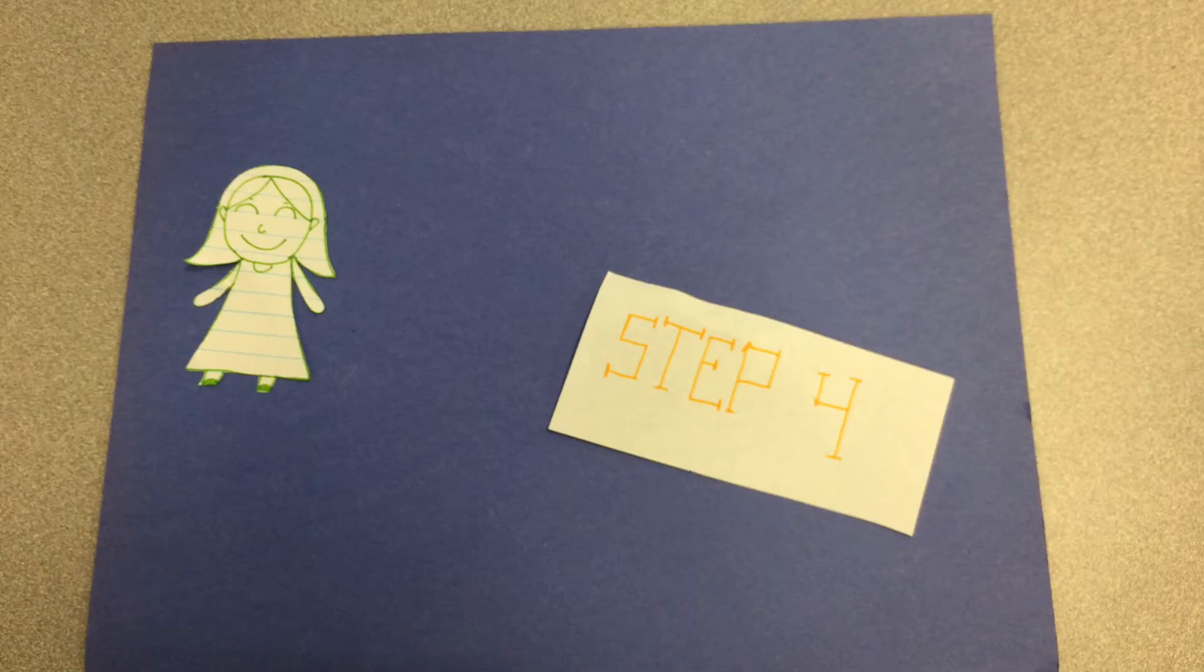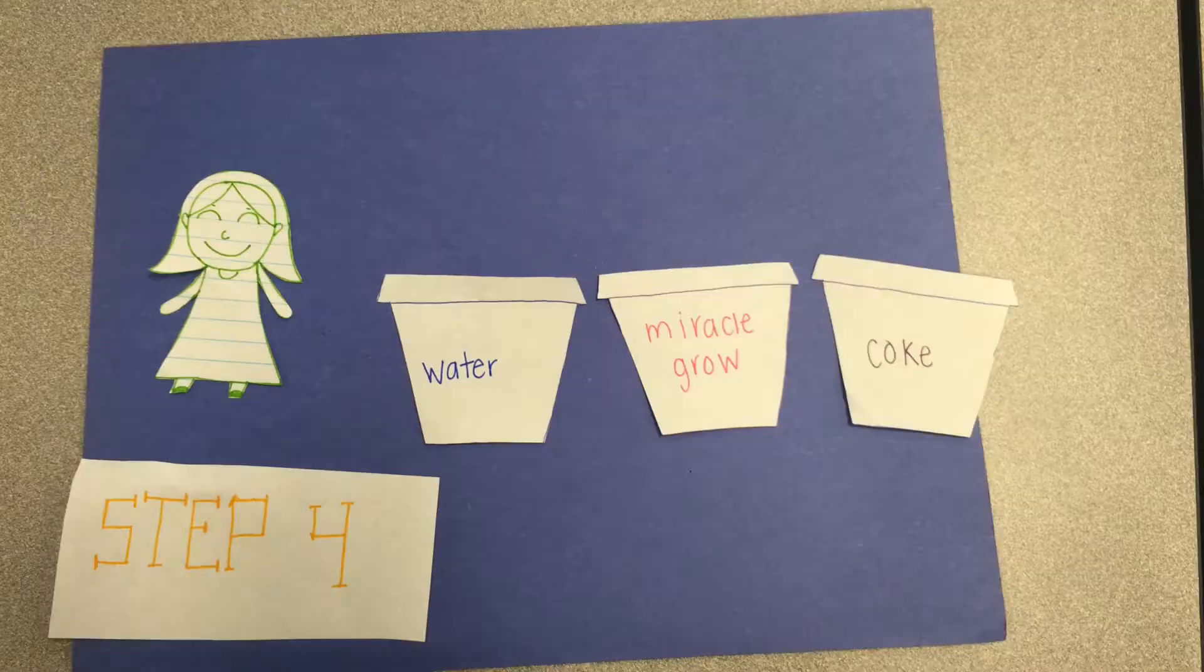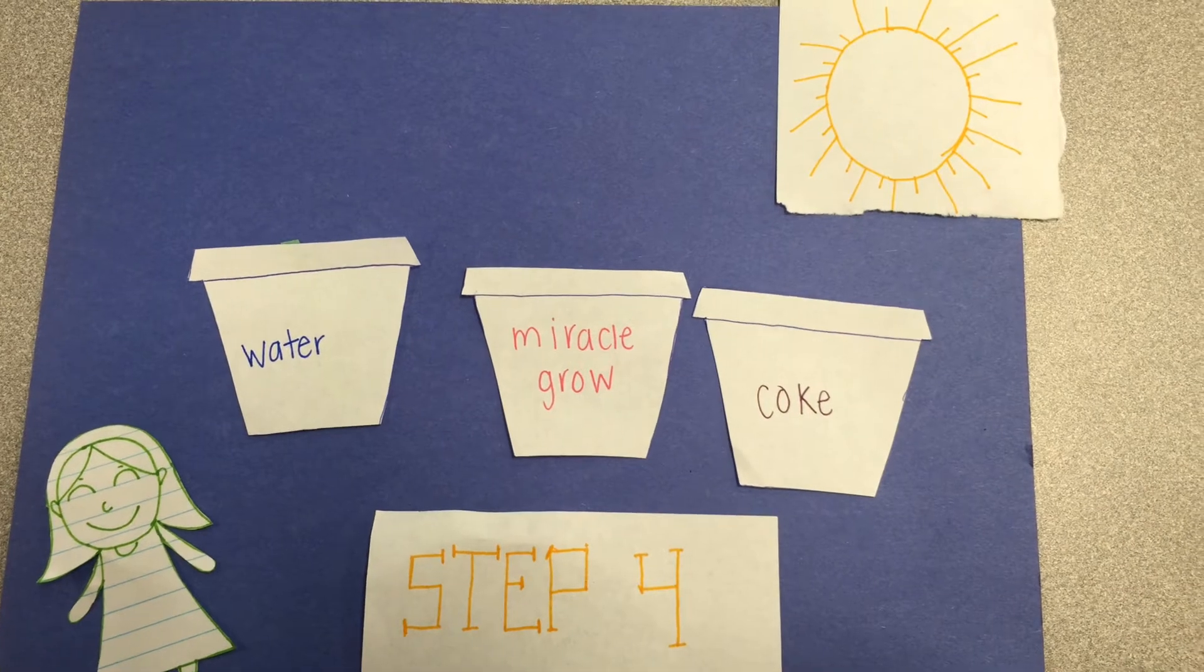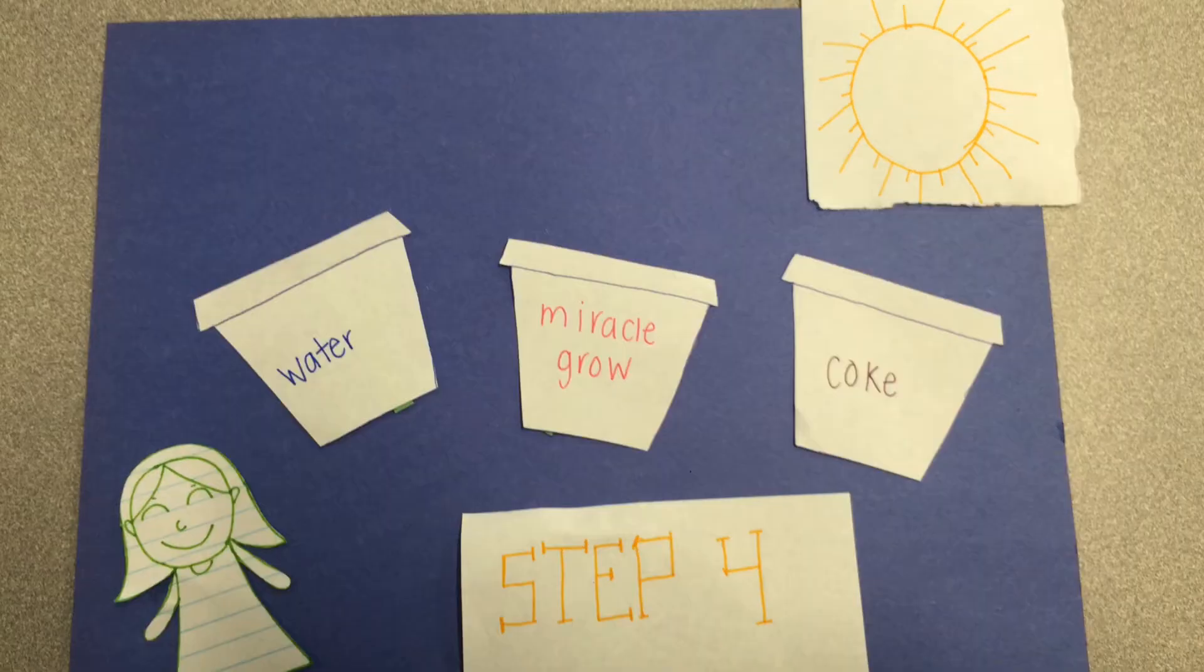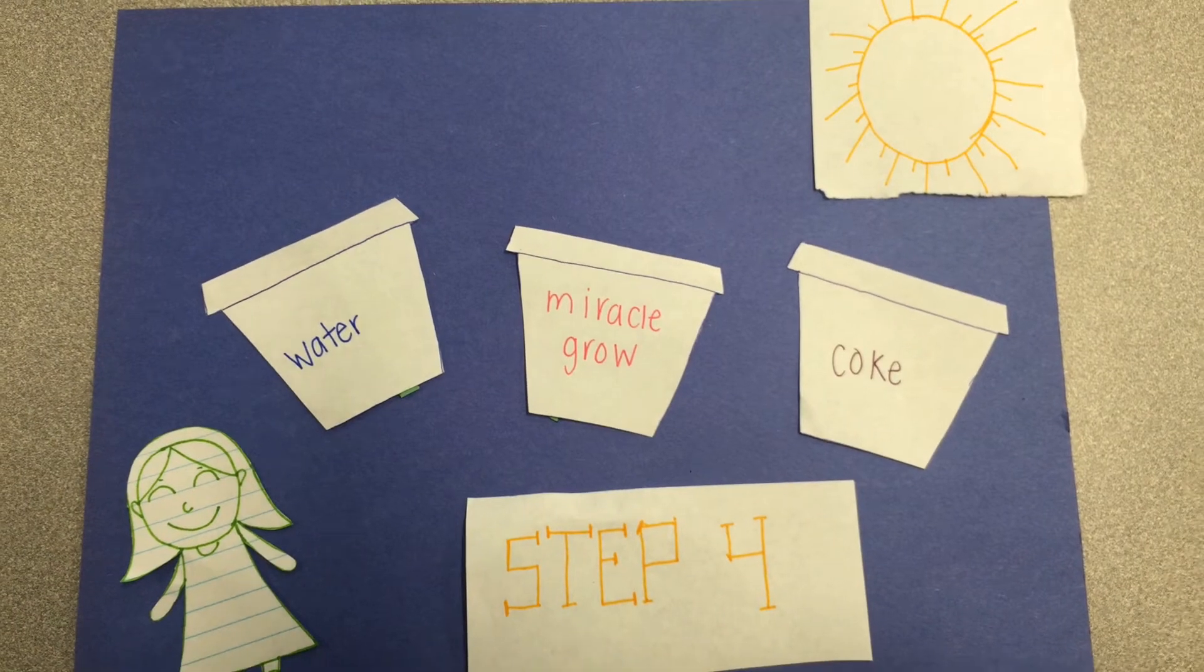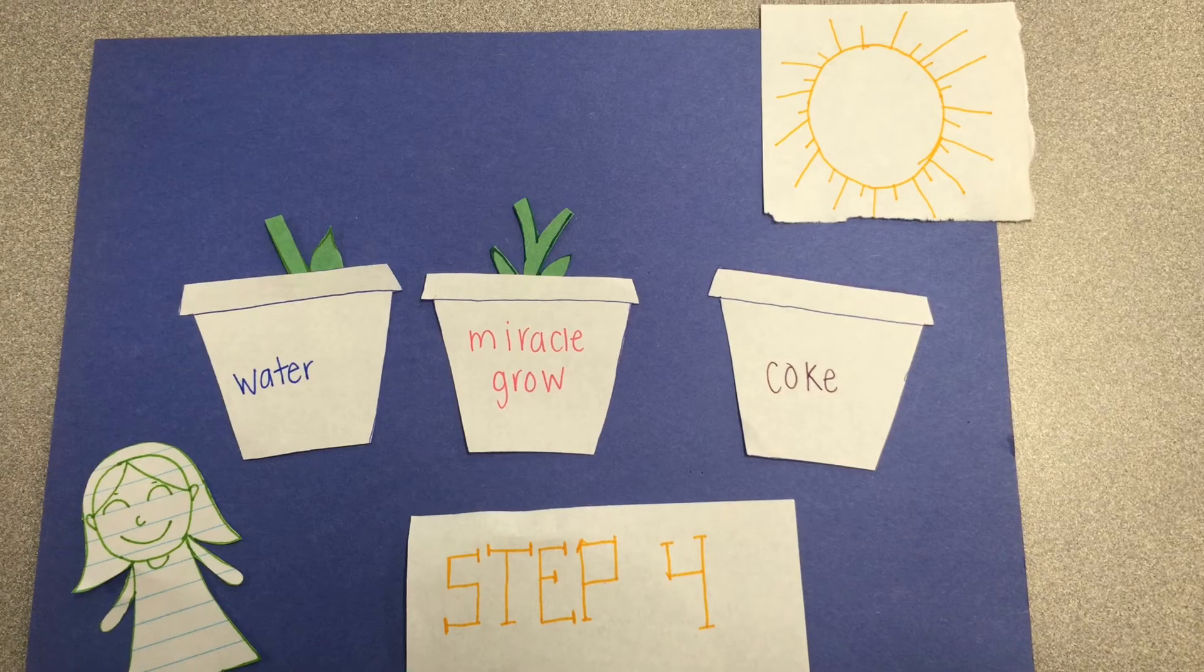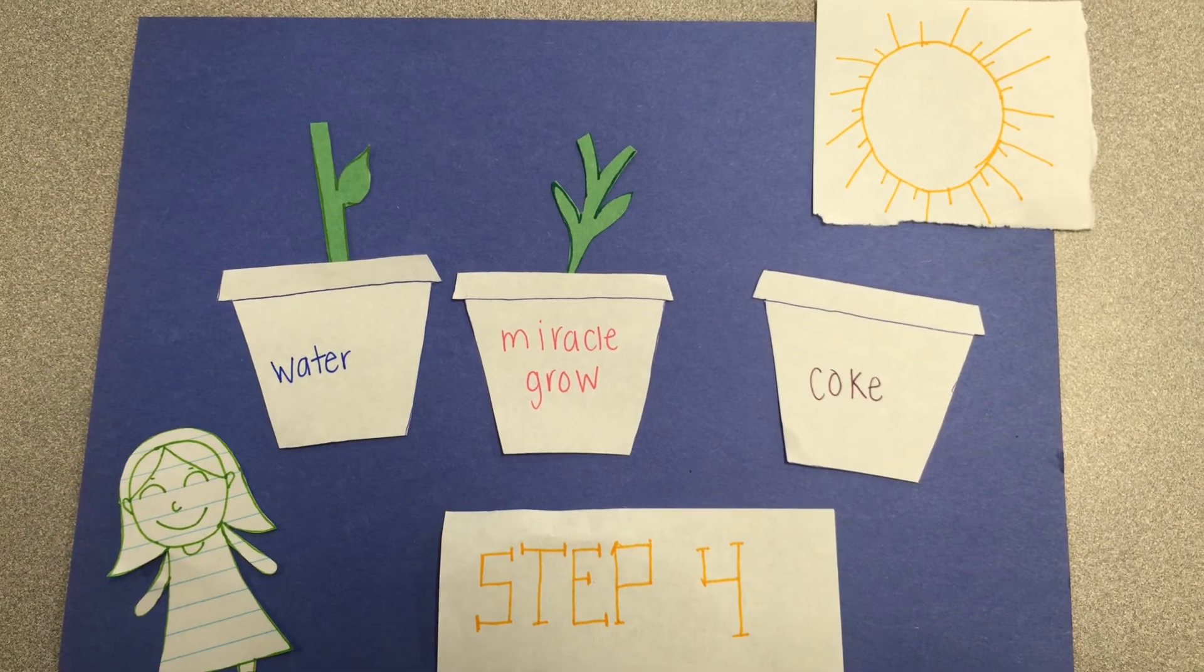Step 4: For the experiment, I am going to label each spot with water, Coke, and Miracle-Gro. And add them to sunlight. Let's see them grow.